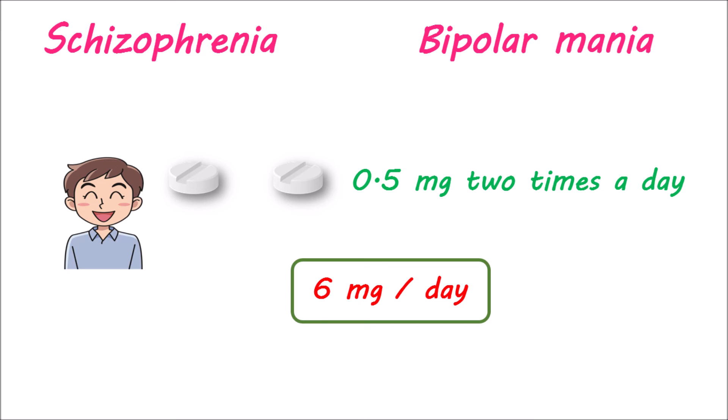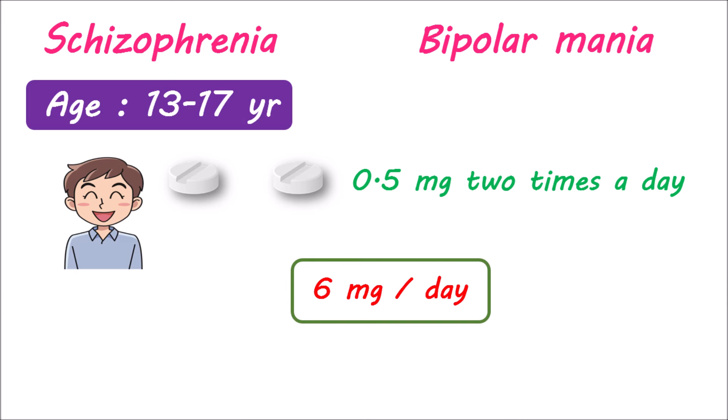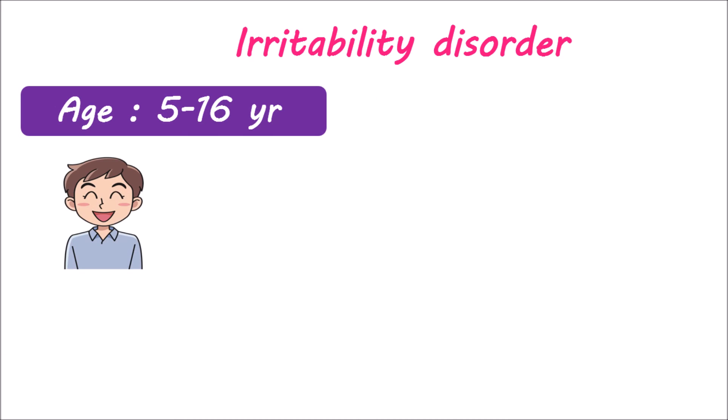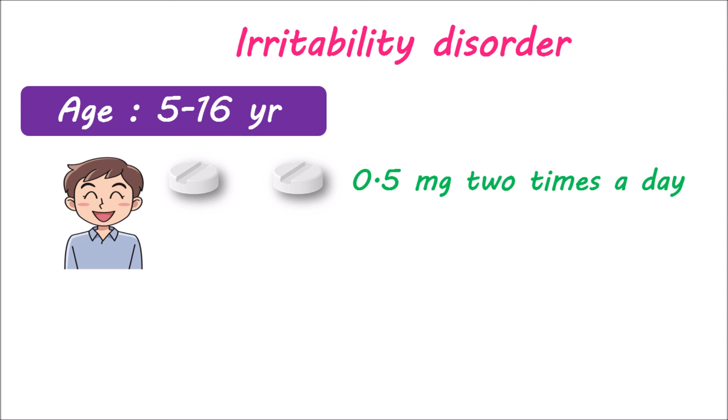The lower age limit is variable based on the indication: for schizophrenia it is 13 years, while for bipolar mania it is 10 years. For treating irritability associated with autistic disorder, risperidone is given to children aged 5–16 years. It can be started at 0.5 mg given twice daily, or at a lower dose of 0.25 mg for children weighing less than 20 kg. The maximum dose in this condition is 3 mg per day.